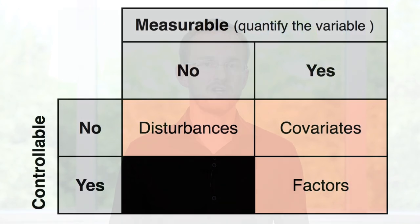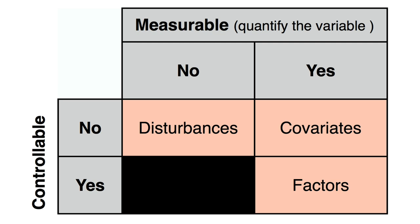This class is all about blocking. The distinction between covariates and disturbances in the prior class was that covariates are measurable and disturbances are not. Neither of them can be controlled.